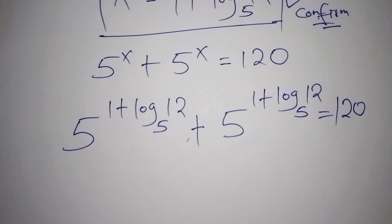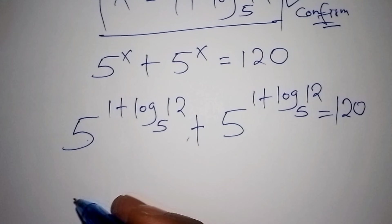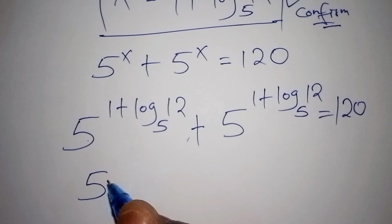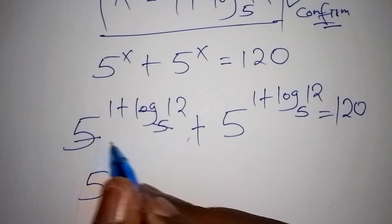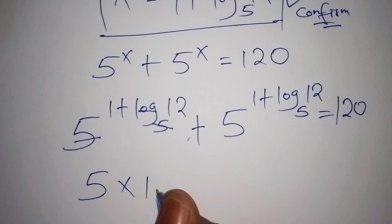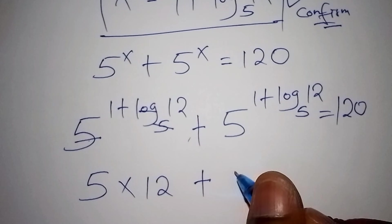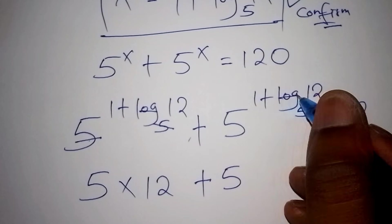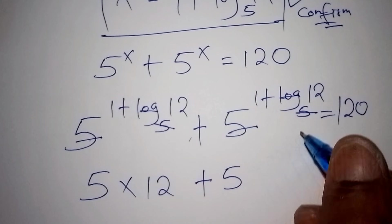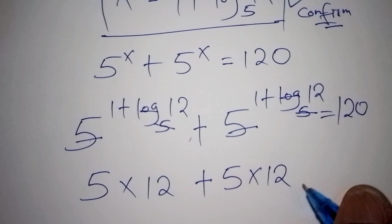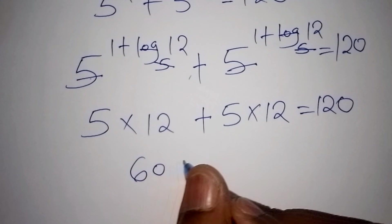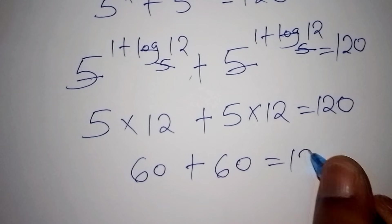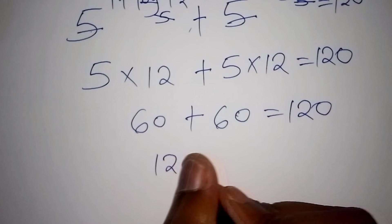Working this out, 5 to the power of 1 gives 5, and the addition sign in the exponent changes to multiplication. The log to base 5 cancels with the base 5, leaving 12. So each term becomes 5 times 12, which is 60. We have 60 plus 60, which equals 120. This confirms our answer is correct.